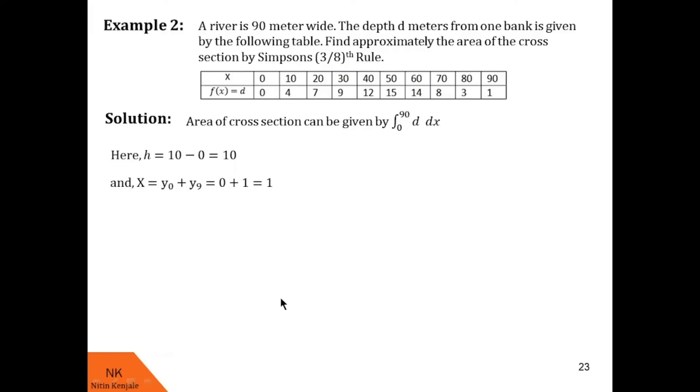Now let us calculate capital T. Capital T is sum of the ordinates which are multiples of 3. Those ordinates are y3, y6. We cannot take y9 in T because y9 is already used in capital X. So t consists of y3 and y6. So y3 plus y6 we found to be 9 plus 14 that is 23. Now let us calculate sum of remaining ordinates that is r. So r consists of y1 plus y2 plus y4 plus y5 plus y7 plus y8. We found it to be 49.